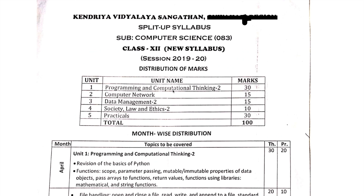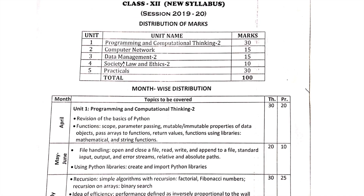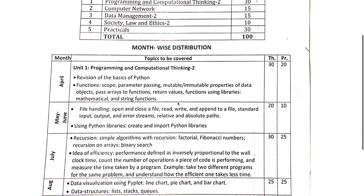There are a total of five units, including one practical. Practicals will be 30 marks, programming and computational thinking will be 30 marks, computer networks will be 15 marks, data management 15 marks, and Society Law and Ethics — this is unit four — carries 10 marks and is common to both Class 12 Computer Science and Information Practices students.